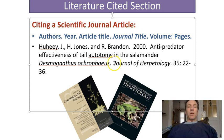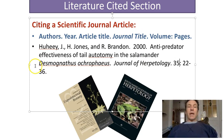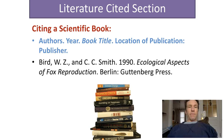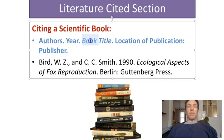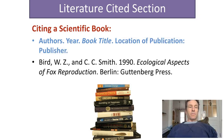Again, find that information in an easier format in the lab report guide. For a book citation, we do: authors, followed by period, followed by year, period, book title — capitalized except for prepositions and articles — period, the location of publication, colon, the name of the publisher.